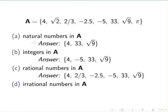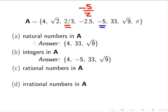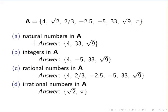And lastly, the irrational numbers. These are real numbers that cannot be expressed as a fraction of two integers. What we have here is the square root of 2, which can't be expressed as a fraction of two numbers, and also pi. So the answer is the square root of 2 and pi.